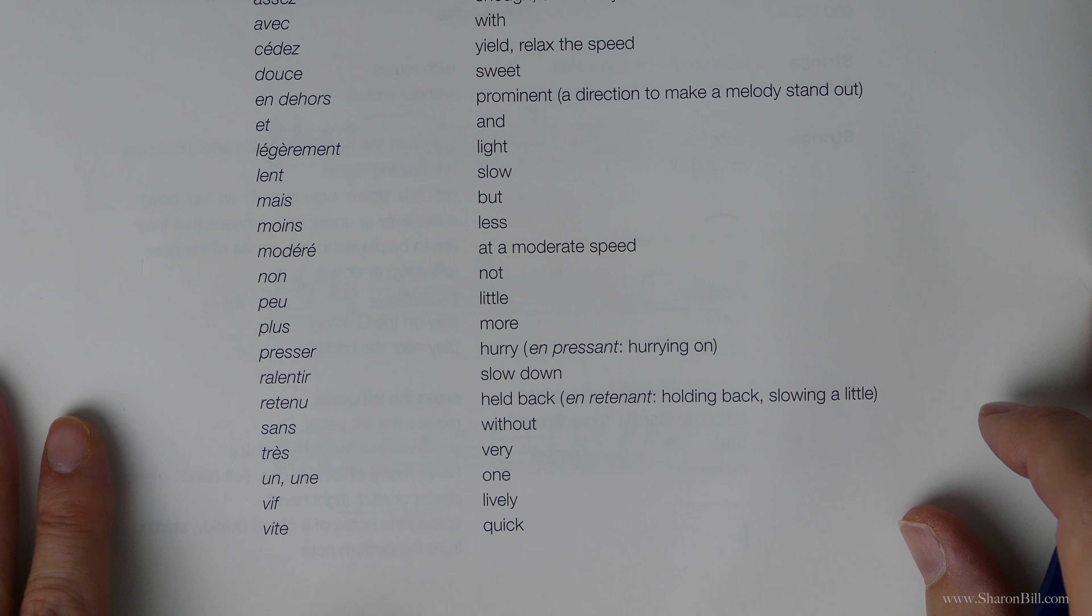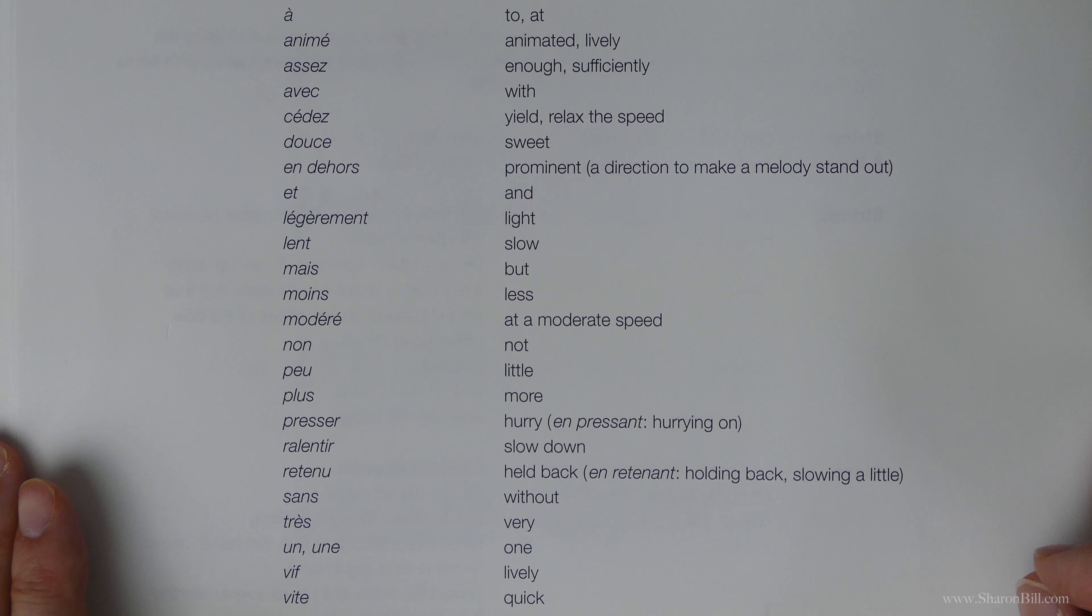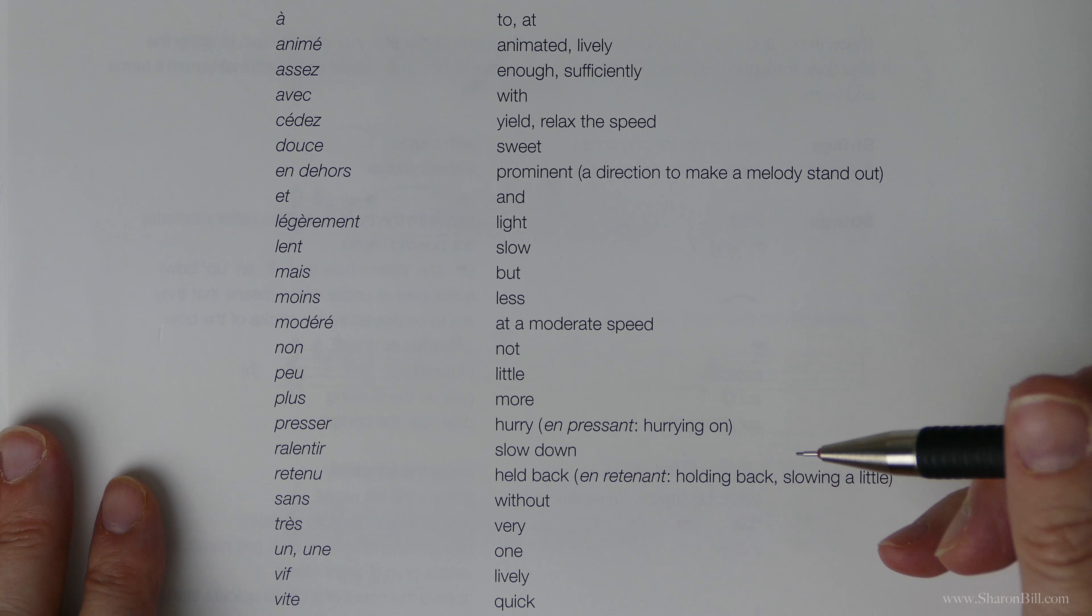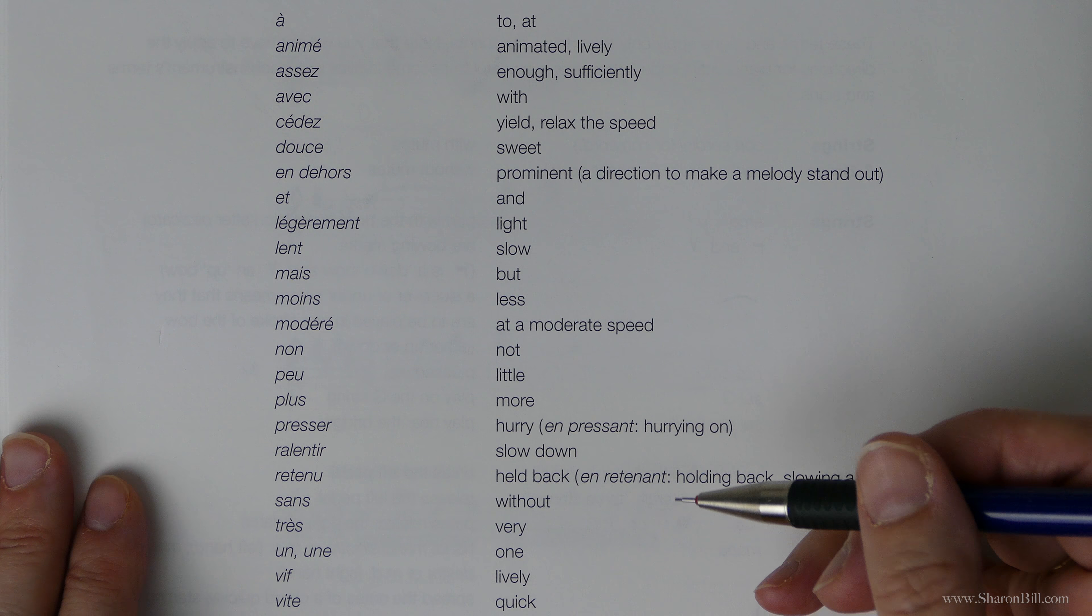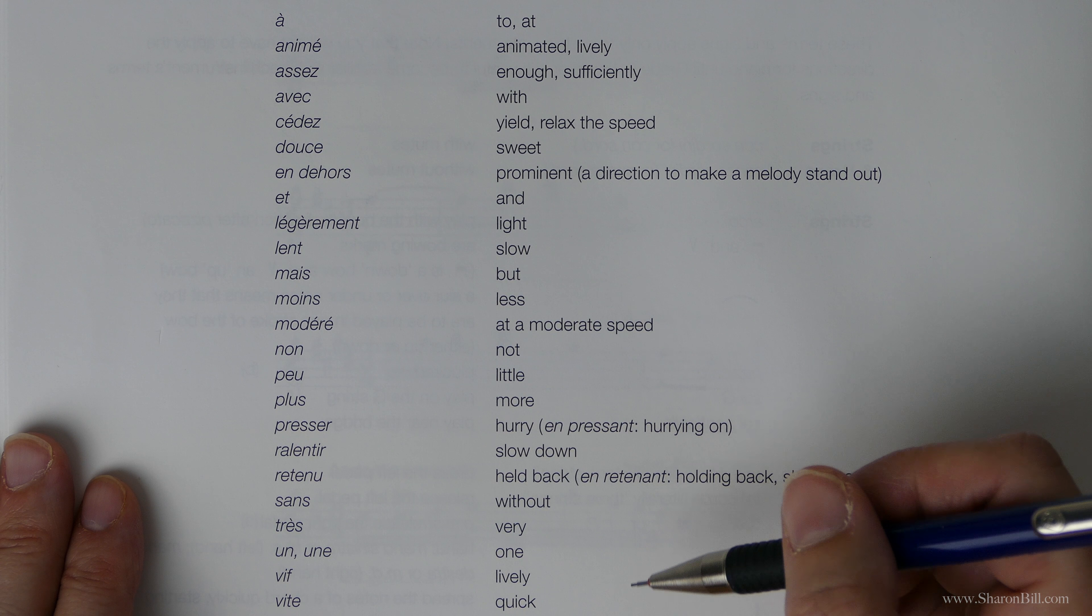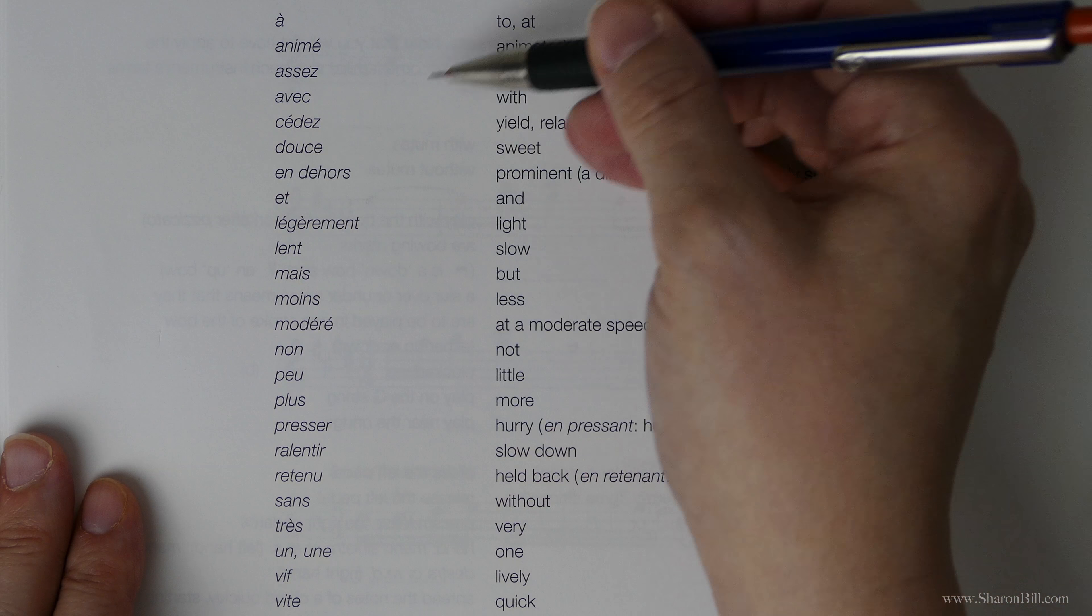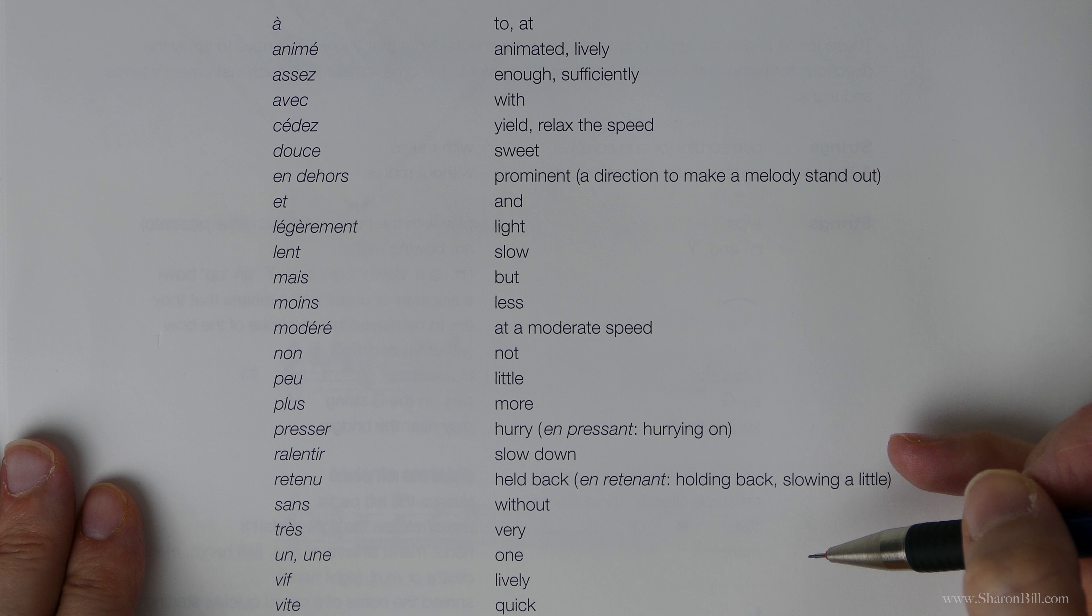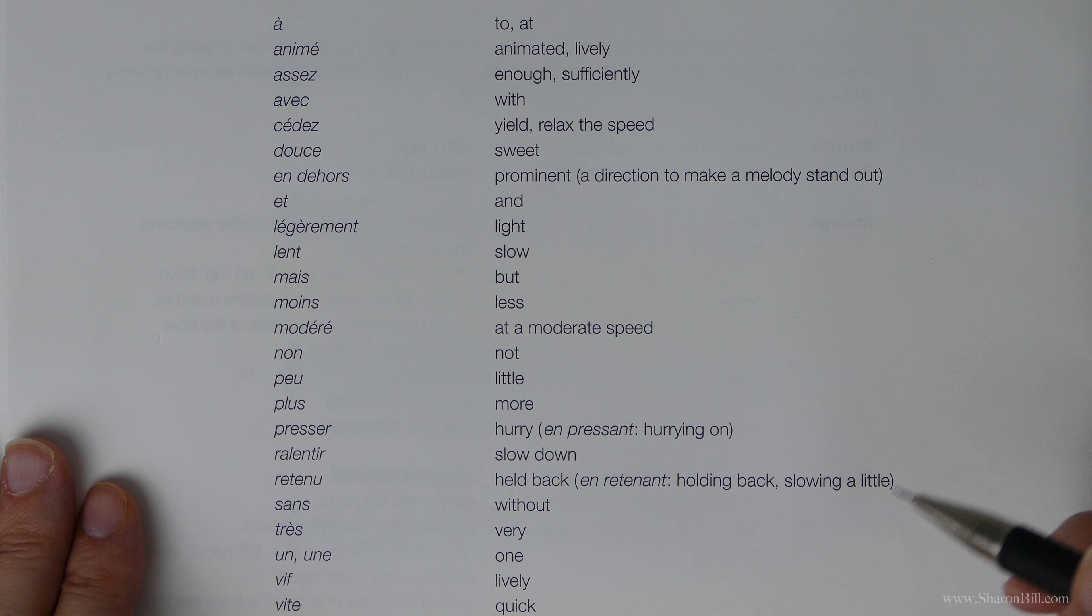And my advice to you would be to compile a list from all of your grades one, two, three and now four as well. But don't compile it in alphabetical order as it is here in each of your other books, but break it down into thematic groups. You could even color code those groups.